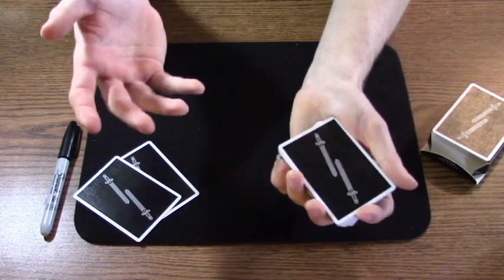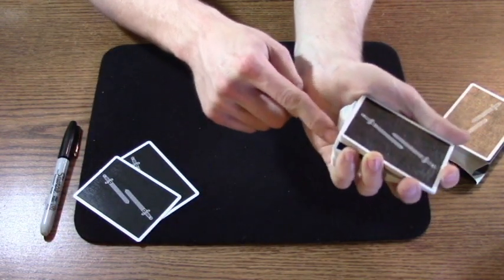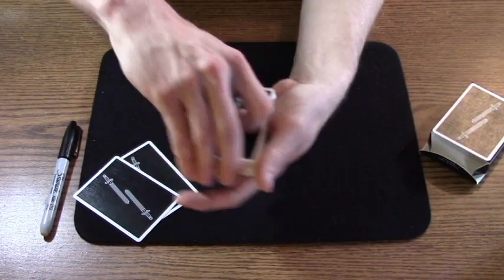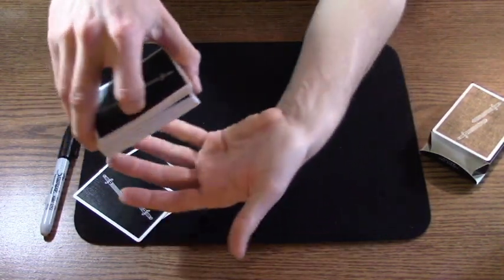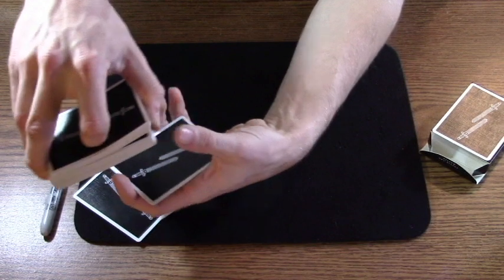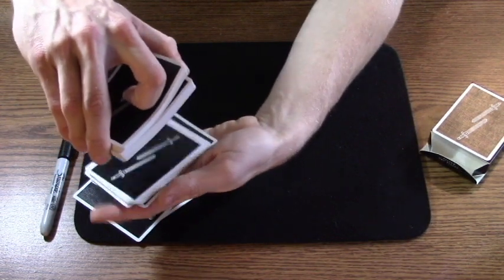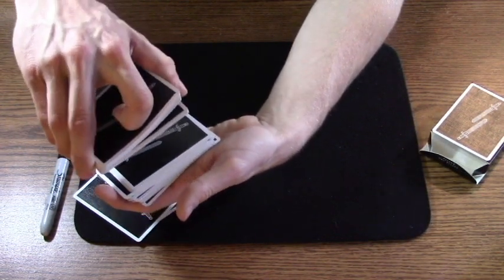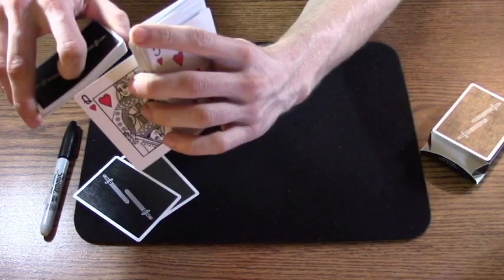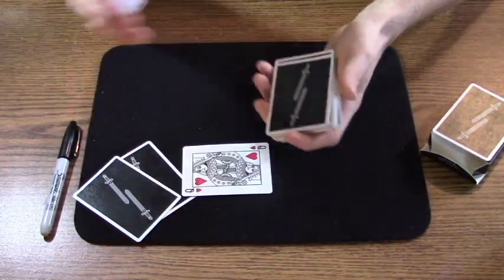Now all I do is the dribble force, which again I have the card I'm gonna force in a pinky break. I switch that to a thumb break, which looks like that, and then I just dribble the cards, everything underneath the thumb break. When the spectator calls stop, I drop everything at that break and they're gonna get the Queen of Hearts. So that's the force I used.